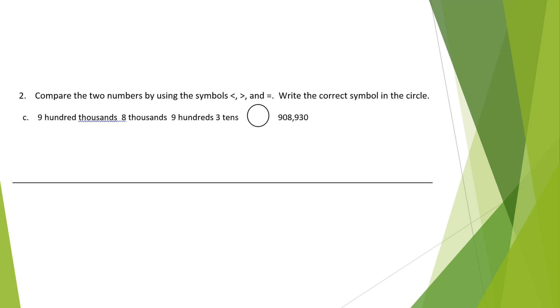Sometimes we get questions like this. Compare the two numbers by using the symbols less than, greater than, or equal. Write the correct symbol in the circle. They did not give us numbers in standard form like this one. They gave us the first number in unit form. There's a digit and words. So I'm going to write it in standard form underneath so I can better compare.